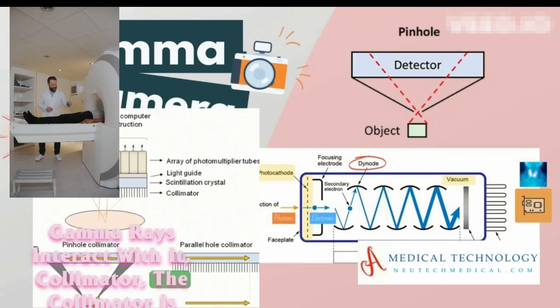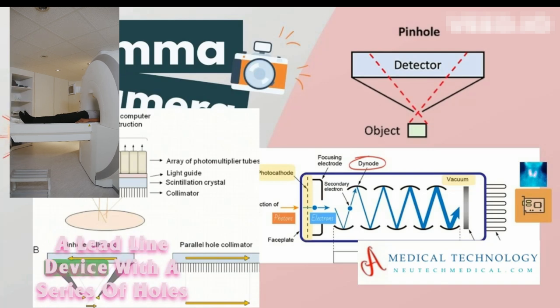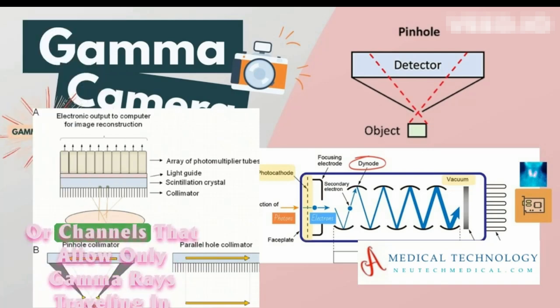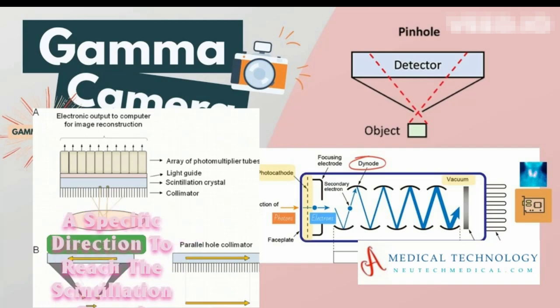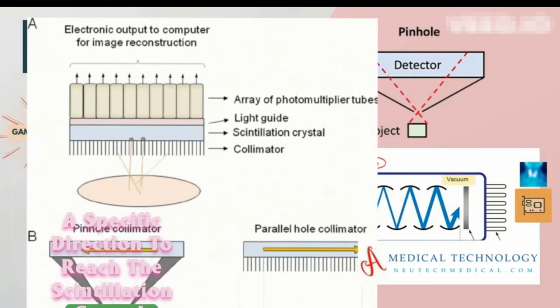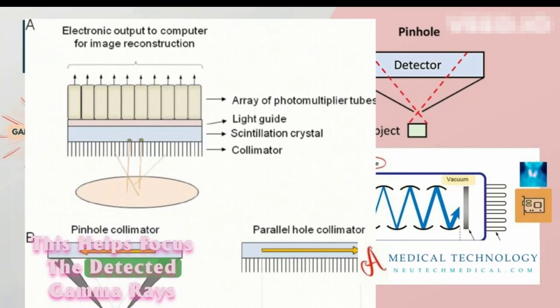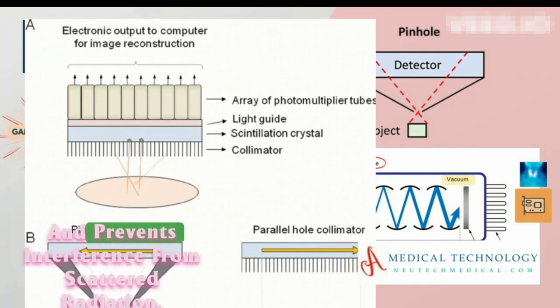Collimator: The collimator is a lead-lined device with a series of holes or channels that allow only gamma rays traveling in a specific direction to reach the scintillation crystal. This helps focus the detected gamma rays and prevents interference from scattered radiation.